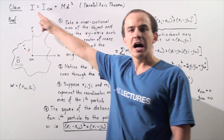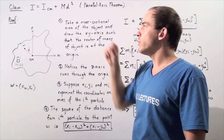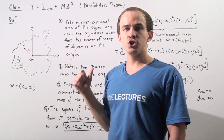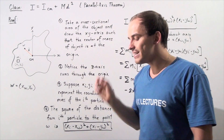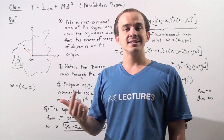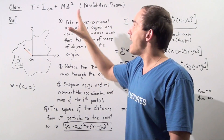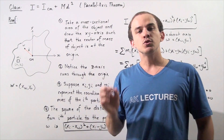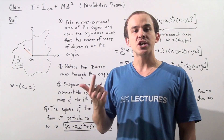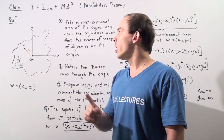We begin with the following claim. The parallel axis theorem gives us the formula: the moment of inertia of the object is equal to the sum of two quantities — I_cm, which is the moment of inertia when the object rotates about an axis through the center of mass, plus md², where m is the mass and d is the distance between the axis through the center of mass and the axis about which the object actually rotates. Note that those two axes are parallel to one another.